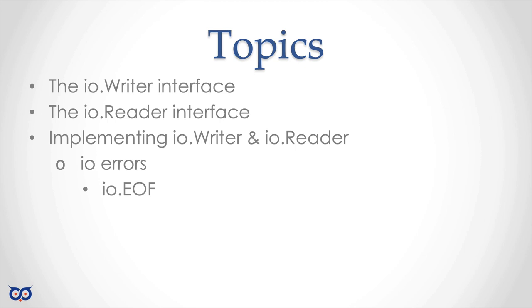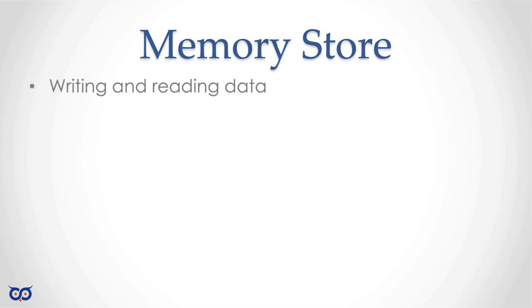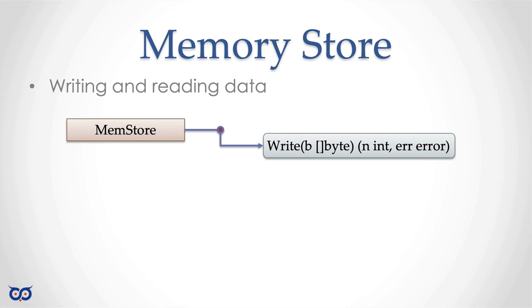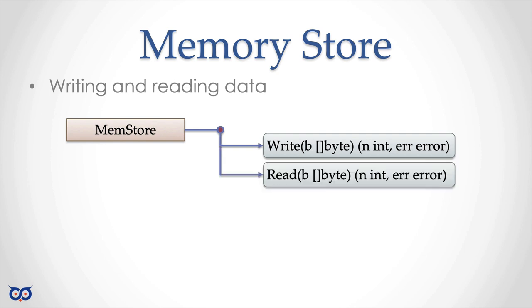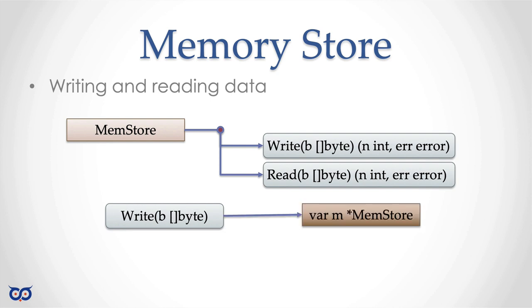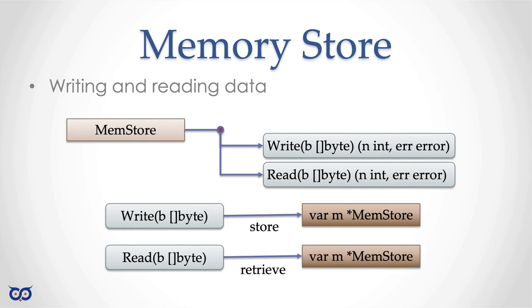Before we get into code, let's go back and talk about the memory store. In Section 9, at the end for our lab, we implemented something called a memory store — it allowed us to write and read data from memory. We had this type called MemStore, and we attached to it a few methods. One of them was a write method that implemented our IO Writer interface, and it also had a read method which implemented the IO Reader interface. Using the write method, we can call this on a MemStore value and store some data, and we can use the read method to retrieve data previously stored.